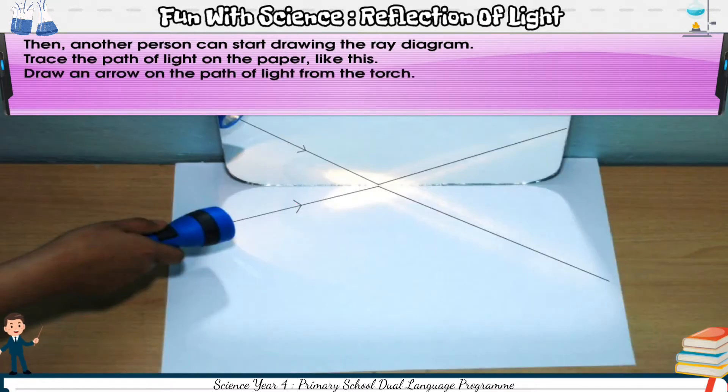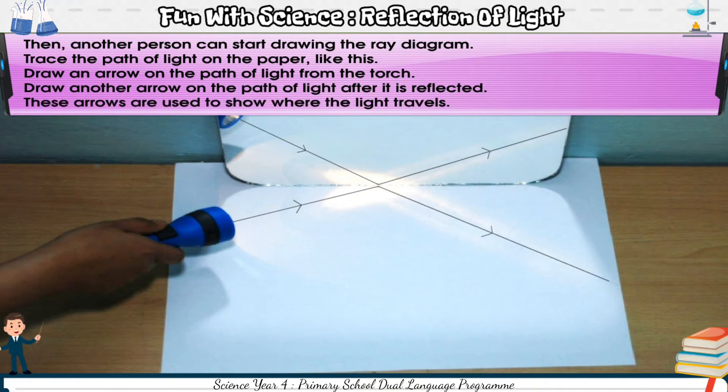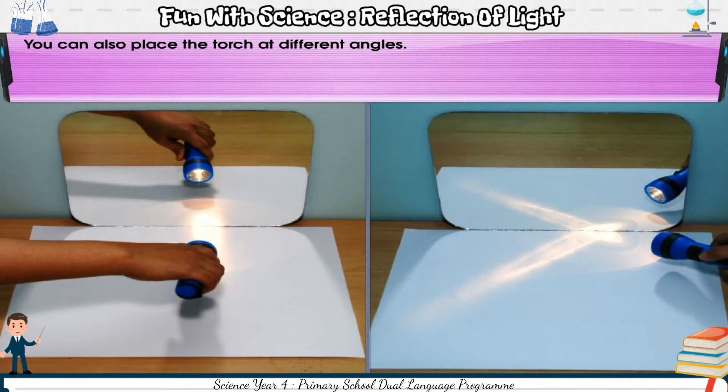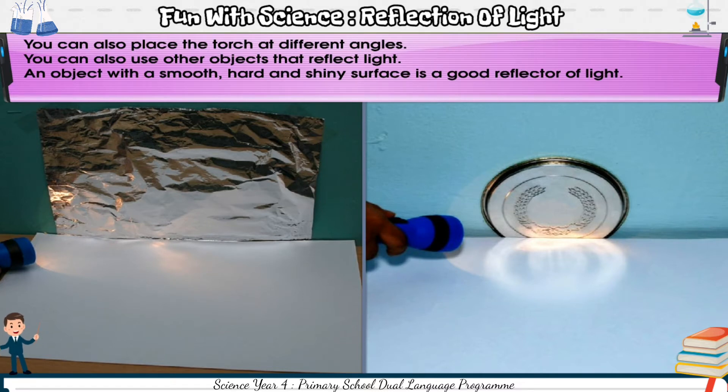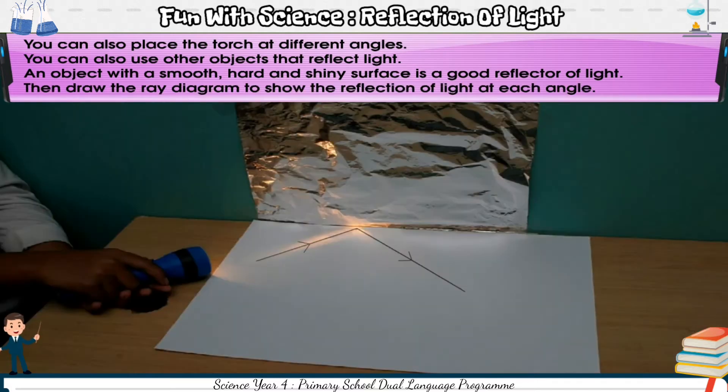Draw an arrow on the path of light from the torch. Draw another arrow on the path of light after it is reflected. These arrows are used to show where the light travels. You can also place the torch at different angles. You can also use other objects that reflect light. An object with a smooth, hard, and shiny surface is a good reflector of light. Then, draw the ray diagram to show the reflection of light at each angle.